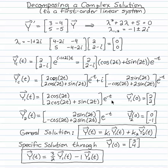This gives me two physical, real-valued solutions that are independent of each other, linearly independent. First is 2 cos 2t, 2 cos 2t plus sine 2t times e to the minus t, and the second is 2 sine 2t minus cos 2t plus 2 sine 2t e to the minus t.